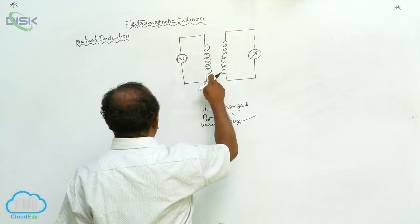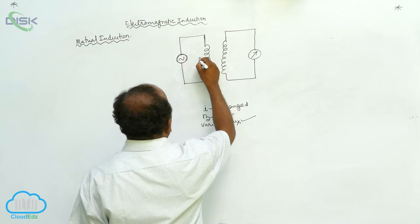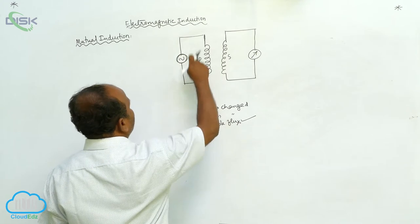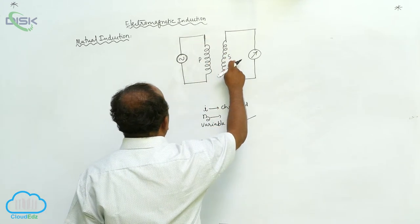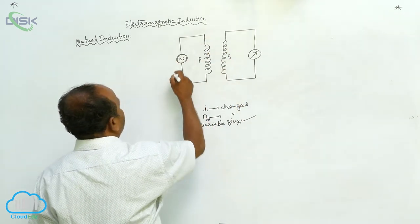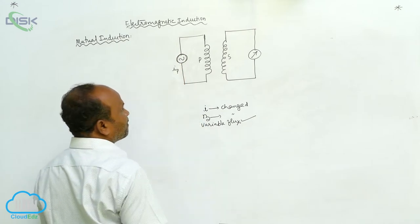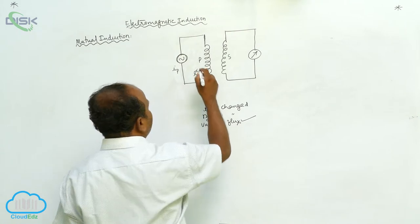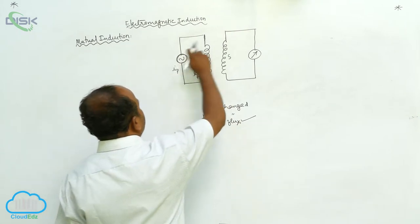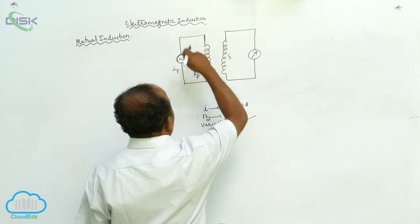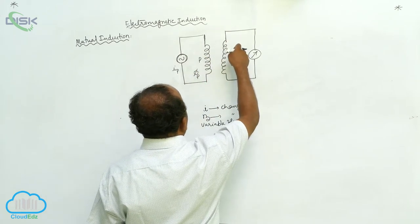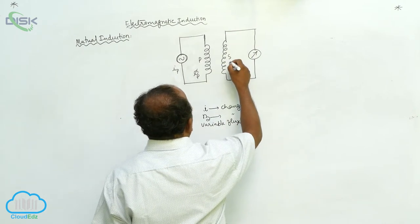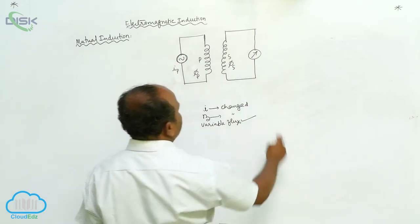The coil where I am changing the current is called the primary coil, and the other is called the secondary coil. I am changing the current — the current in the primary coil. The magnetic flux linked with the primary coil is ΦP. There is a change in current that produces induced EMF in the second coil. Therefore, the flux linked with the secondary coil is ΦS.